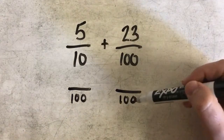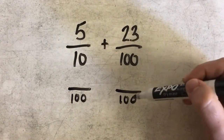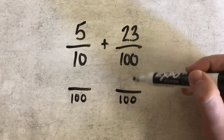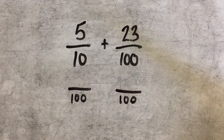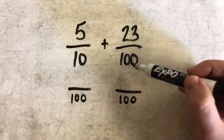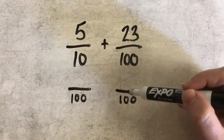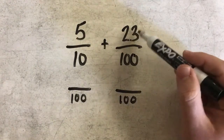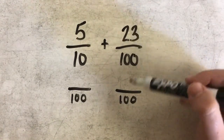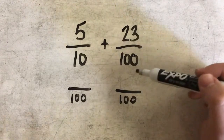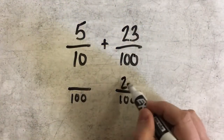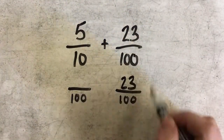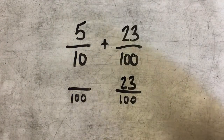Now, I didn't change anything to my denominator — I went from 100 to 100, so I didn't do anything to the denominator. If I didn't change the denominator in any way, I can't change the numerator, otherwise I'm writing a non-equivalent fraction. So 23 hundredths would still just be 23 hundredths down below.